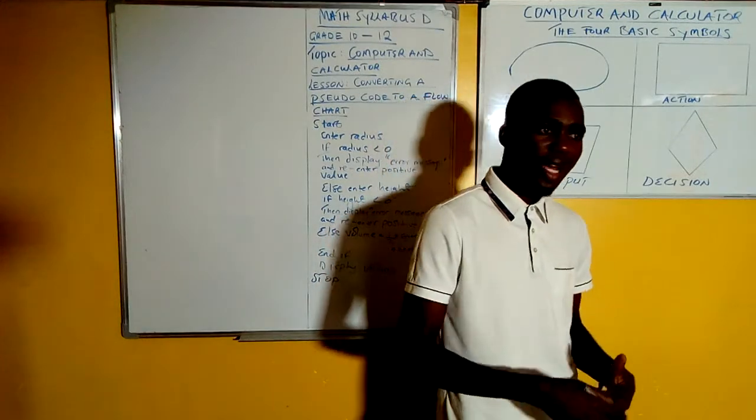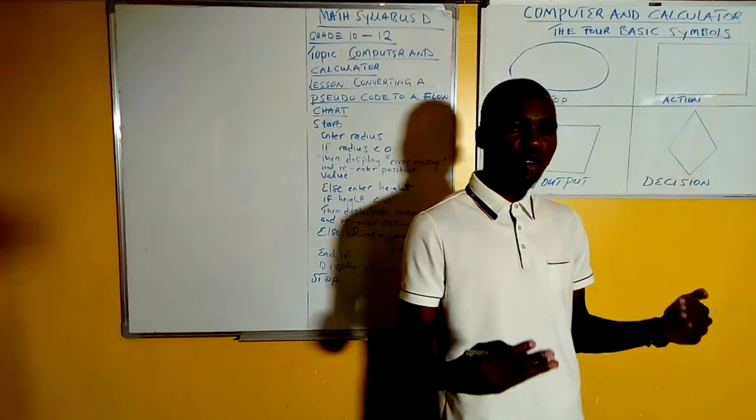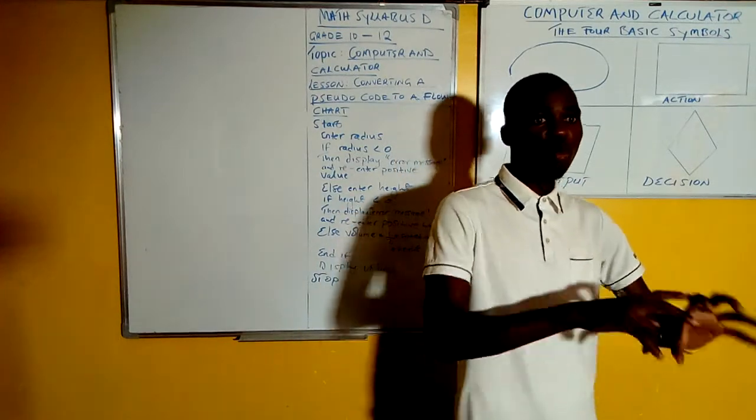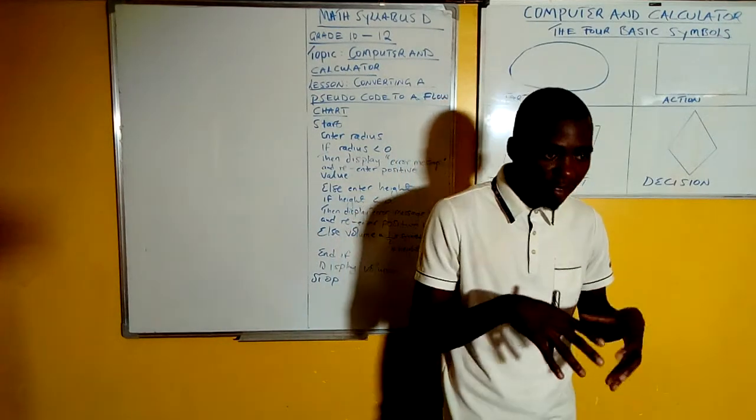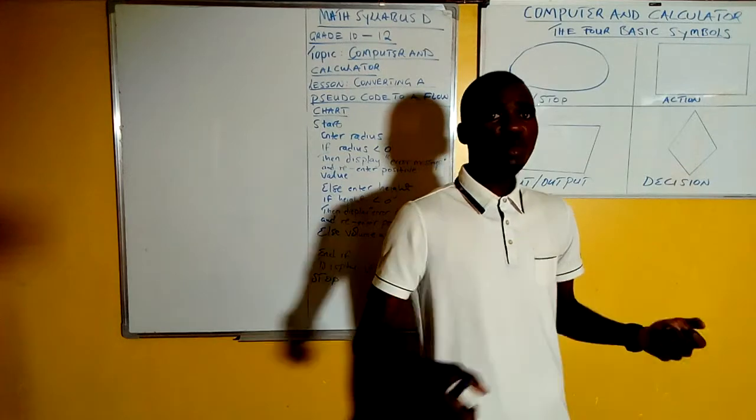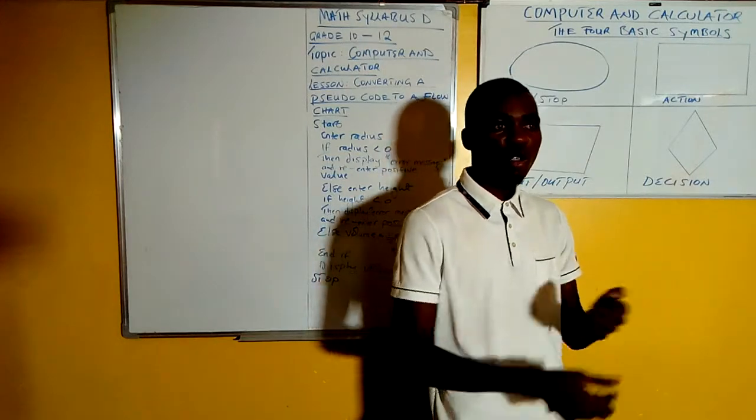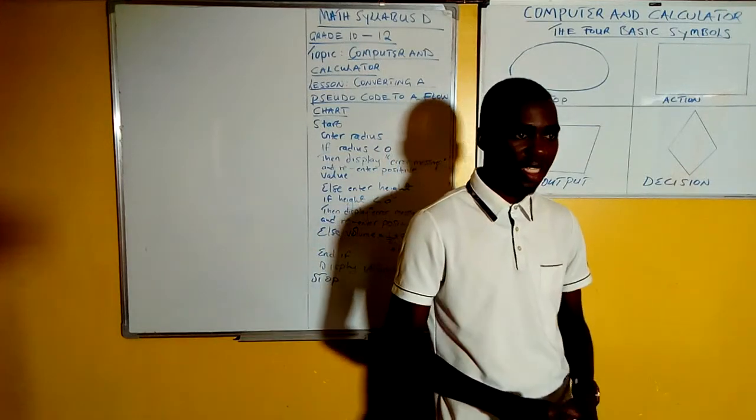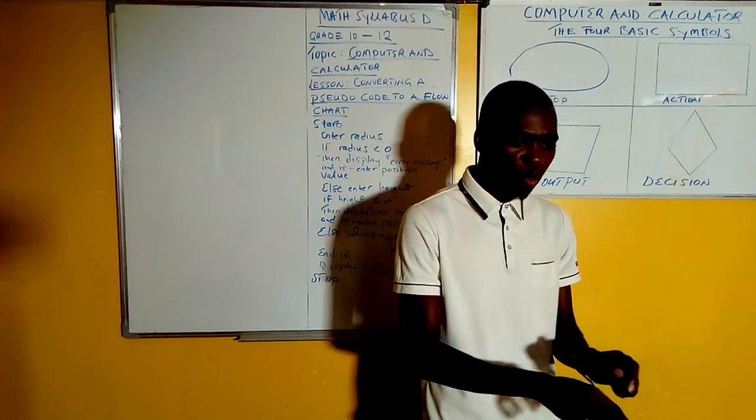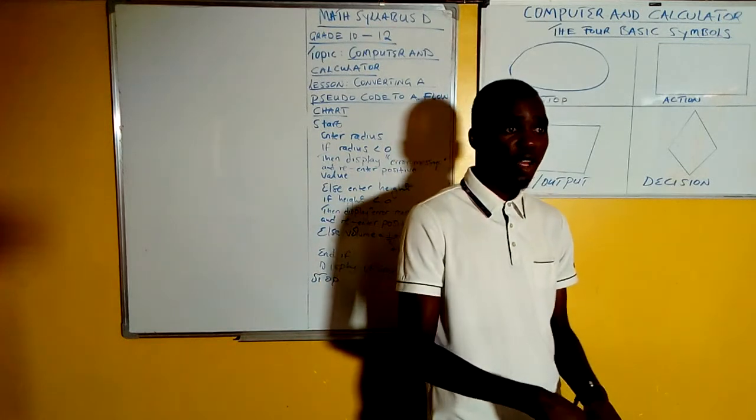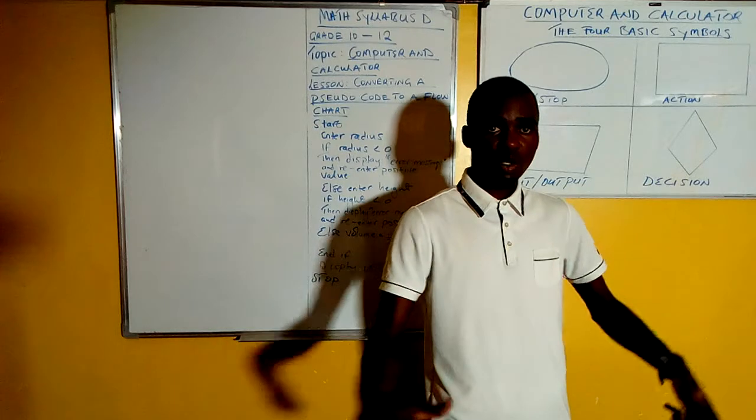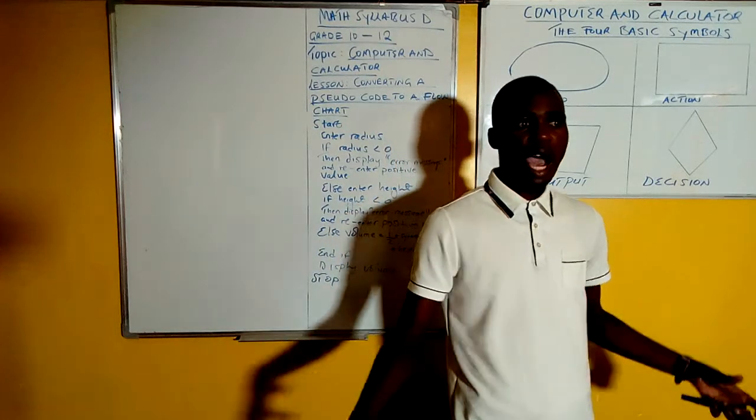In a computer we have what we call the inputs, the things that you put into the computer. Then we also have the outputs, the things that the computer produces after processing the data. For example, after you input a song into the laptop, the laptop produces sound. Sound is an example of outputs.